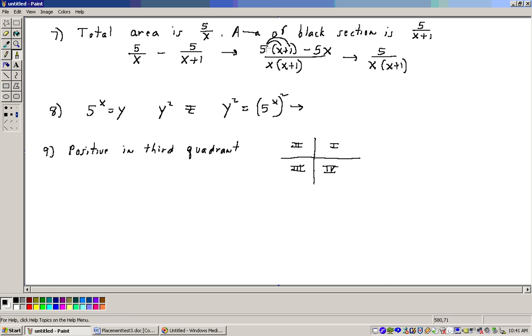Now simplifying this, we could take the 5 through to get 5x plus 5 minus 5x. Well, the 5x minus 5x is 0, and all we're left with on the top is 5 times 1, which is 5. So we get 5 over x times x plus 1, and that would be the answer to problem number 7.